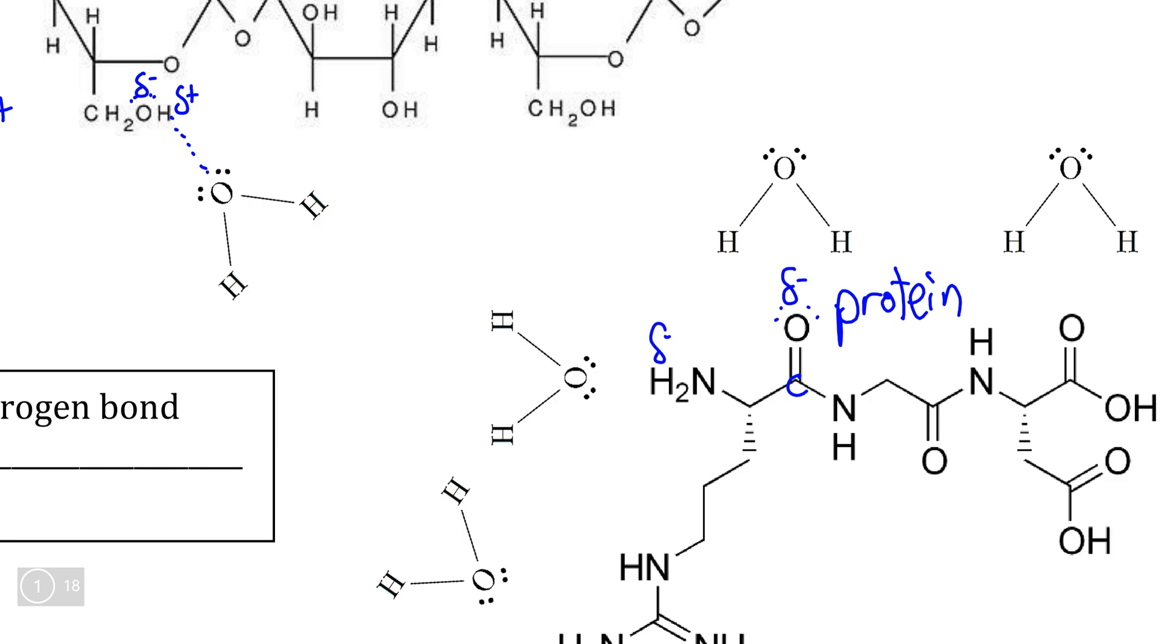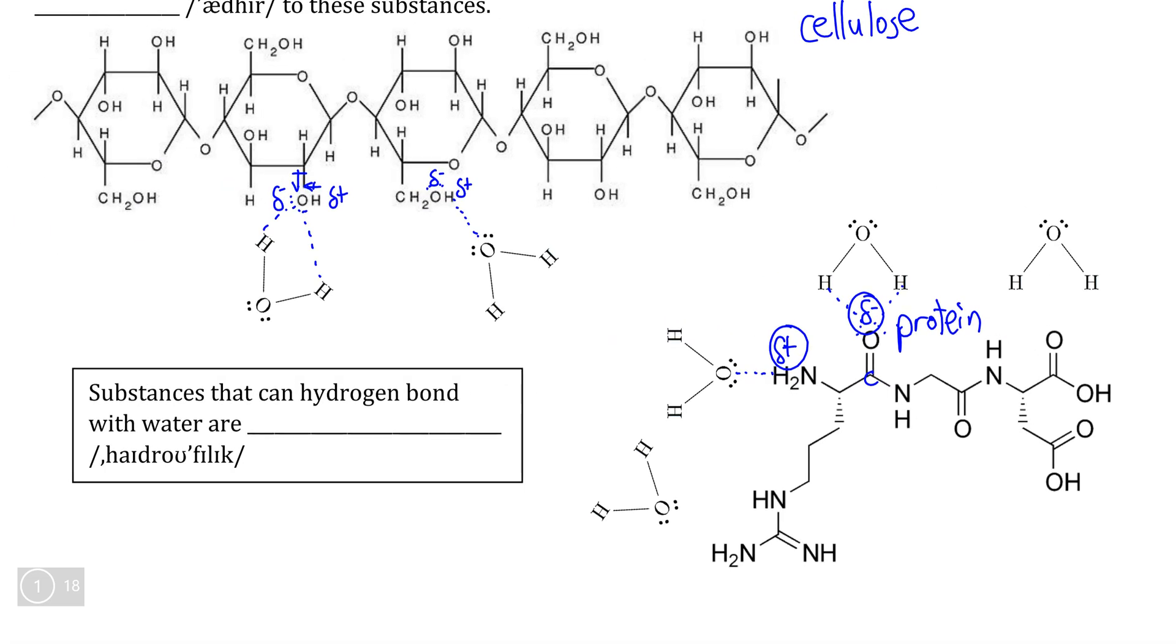And likewise, these hydrogens bonded to this nitrogen here are going to have a positive pole, again, allowing water to form hydrogen bonds with the oppositely charged pole in this silk protein.